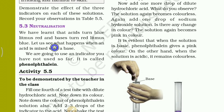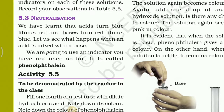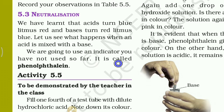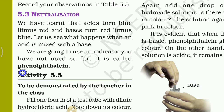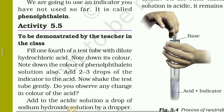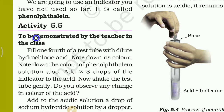Let us see what happens when an Acid is mixed with a Base. We are going to use an indicator you have not used so far. It is called Phenolphthalein. This is one synthetic indicator, also called a chemical indicator or artificial indicator.